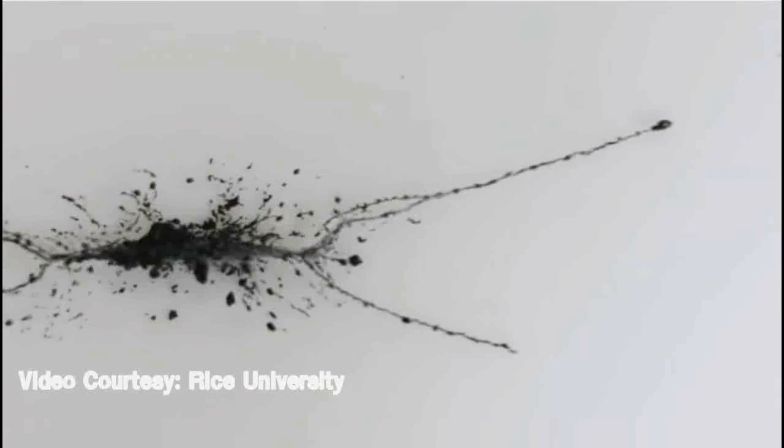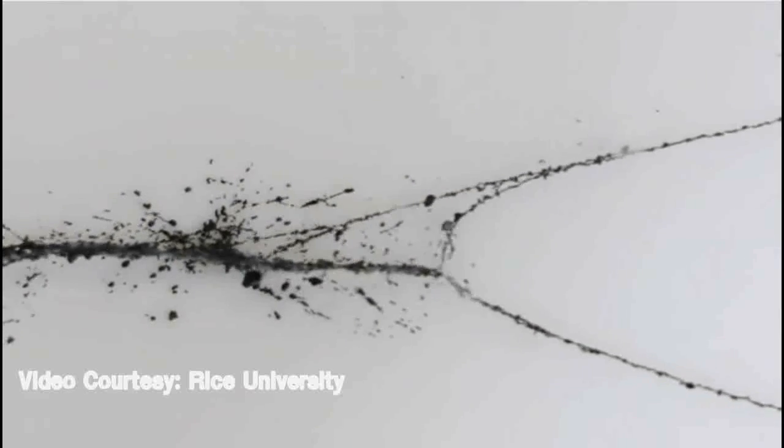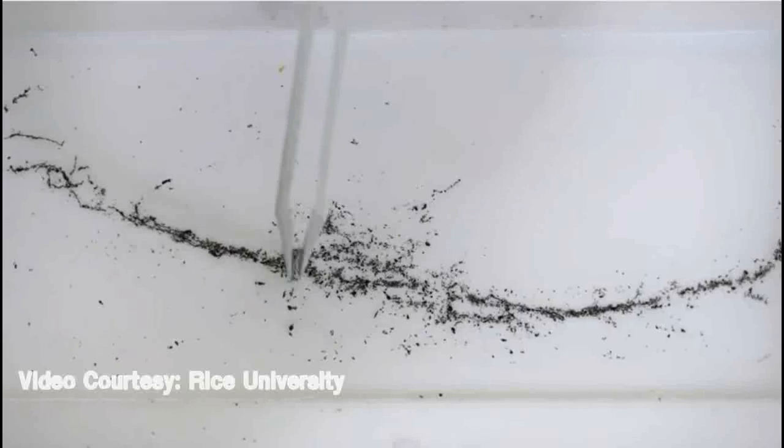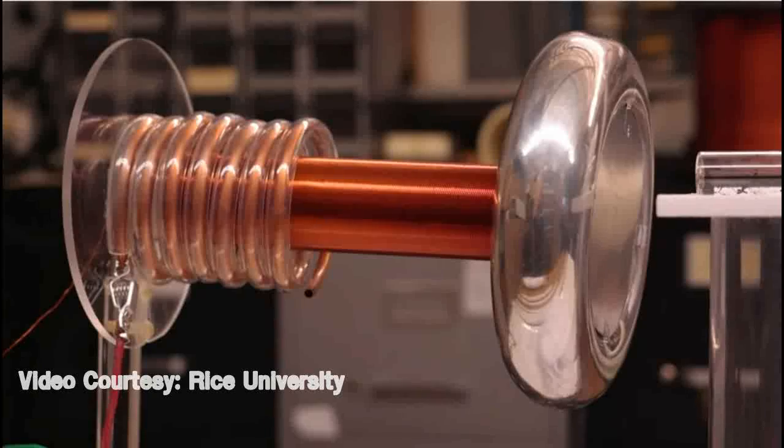Tesla invented the coil in 1891 with the intention of delivering wireless electrical energy. Electrical fields have been used to move small objects, but only over ultra-short distances.